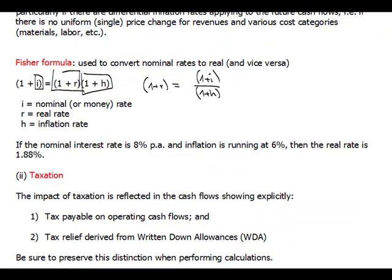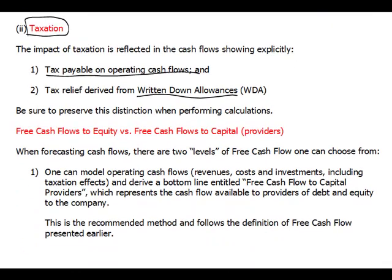The next thing to consider is taxation. Tax needs to be taken into account by calculating tax on operating cash flows, since in most jurisdictions tax is paid more on cash flows than profits. One important point: tax-deductible depreciation — called written down allowances — exists and reduces the tax cash flow, but is not itself included as a cash item in your discounted cash flows analysis.